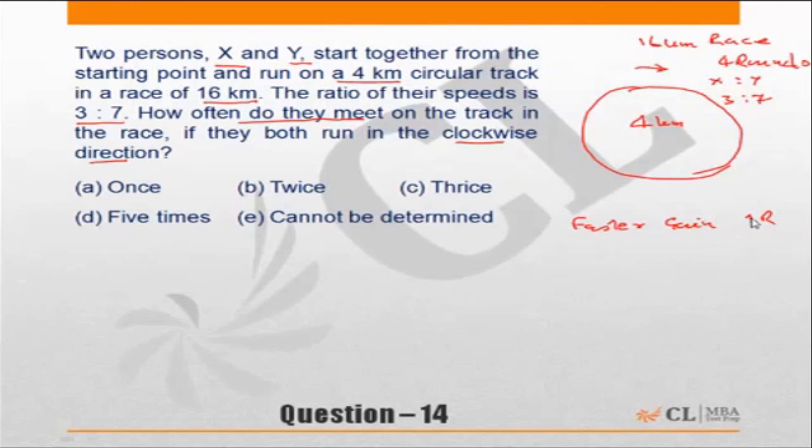gained one complete round, that means they have met once. If the faster person has gained two complete rounds—after every gain of one round means one meeting—so a gain of two rounds means they've met twice, and so on. Effectively, the question can be converted to: when the faster person finishes the race, how many rounds has he gained over the slower person?